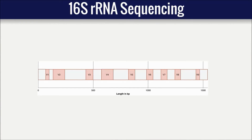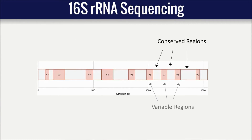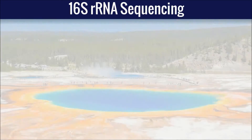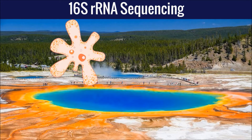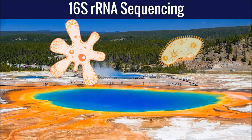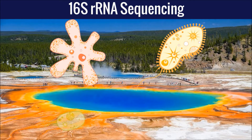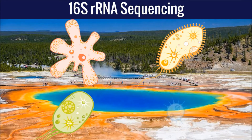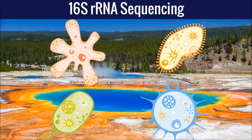Conveniently, the 16S ribosomal RNA gene consists of both highly conserved and variable regions. Universal PCR primers can be designed to target the conserved regions of 16S, making it possible to amplify the gene in a wide range of different microorganisms from a single sample.